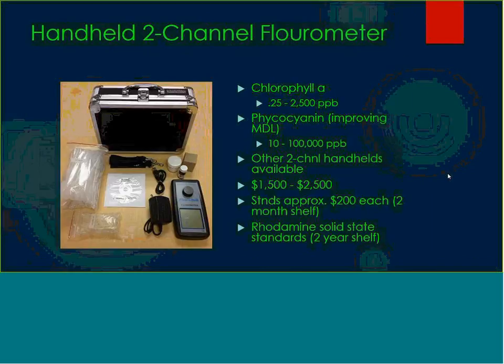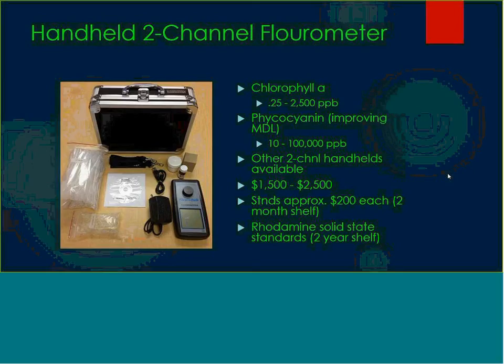The tool we use for looking at fluorescence is a handheld field fluorometer — there are several types available. The measurement range for chlorophyll is from 0.25 to 2,500 micrograms per liter, and the phycocyanin is 10 to 100,000. We're working on trying to bring that minimum detection level down a little bit for the phycocyanin. They range anywhere from $1,500 to $2,500 depending on brand. Standards are approximately $200 a piece for calibrating with a two-month shelf life, and calibrations are usually good for a year or better. You can get rhodamine solid-state standards to track instrument drift through the course of your sampling period.